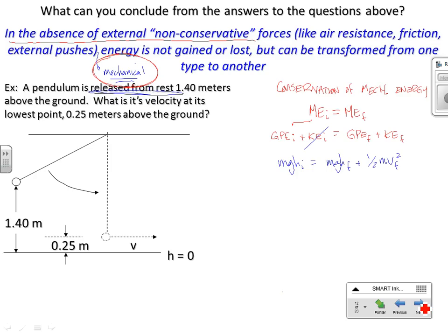Since there's an M in every term we can divide them all out. We're looking for V_f, so I'm going to do this: G H initial minus G H final equals one half V_f squared. Or really, V final is the square root of 2G times H initial minus H final. Looks exactly like kinematics. Notice this looks like V is the square root of 2A delta X—same equation.